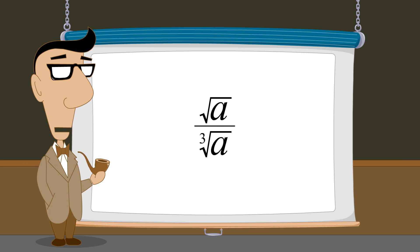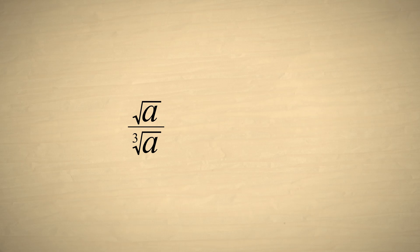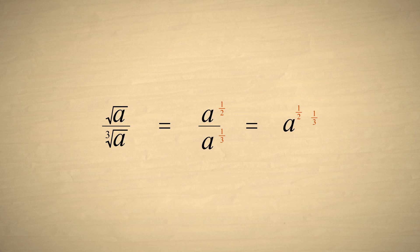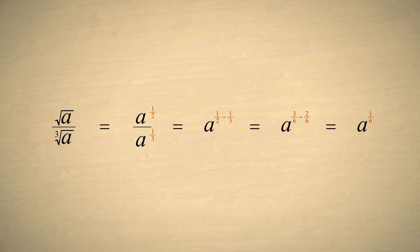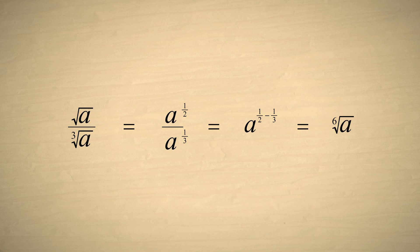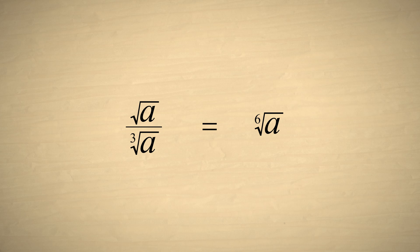As another example, let's simplify the square root of a over the cube root of a. We start by writing the square root of a as a to the one-half, and the cube root of a as a to the one-third. We can then subtract the exponents one-half and one-third. Using a common denominator of six, we write this as three-sixths minus two-sixths, which gives us a to the one-sixth, or the sixth root of a. So the square root of a over the cube root of a can be more simply written as the sixth root of a.